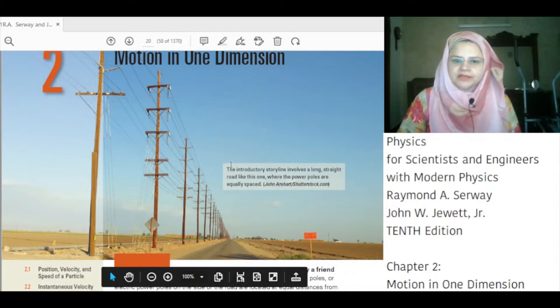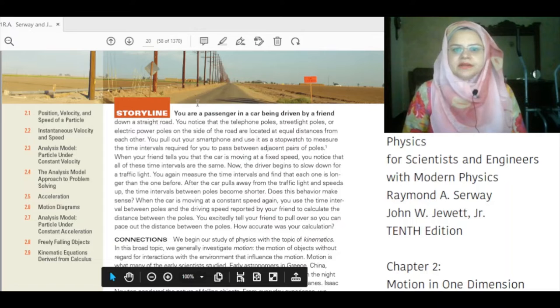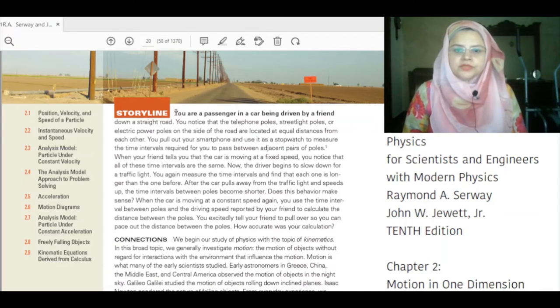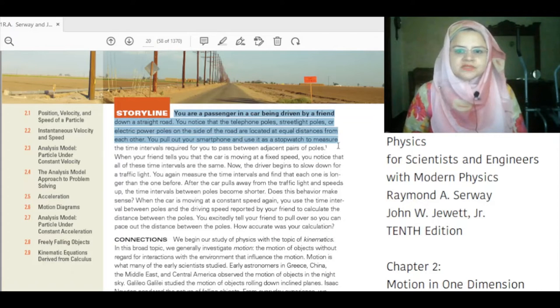The introductory storyline involves a long straight road like this one where the power poles are equally spaced. You are a passenger in a car being driven by a friend down a straight road. You notice that the telephone poles, street light poles or electric power poles on the side of the road are located at equal distances from each other. You pull out your smartphone and use it as a stopwatch to measure the time interval required for you to pass between adjacent pairs of poles.